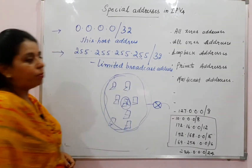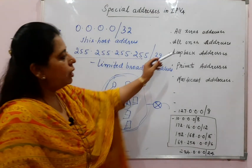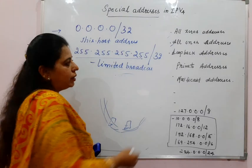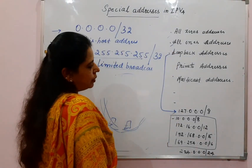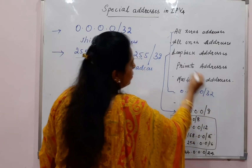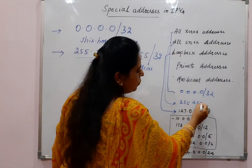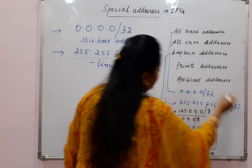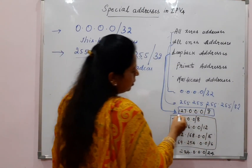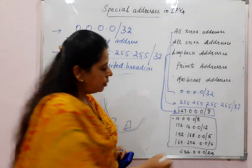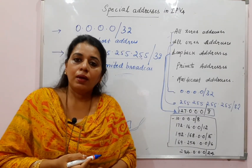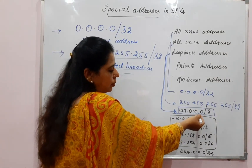The third type is the loopback address. All-zeros is one single address, all-ones is one single address. The loopback address is 127.0.0.0/8. The prefix value is 8, and the lower the prefix value, the higher the number of IP addresses or hosts in the block. So this is a very large block — 2 to the power of (32 minus 8) = 2 to the power of 24 addresses.